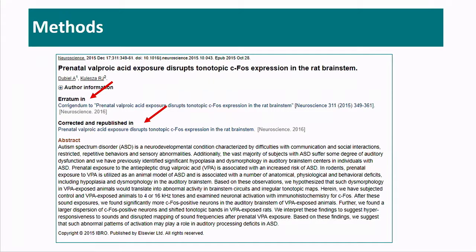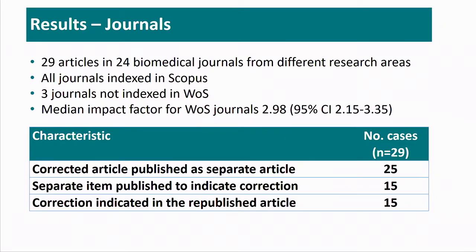For example, when you go to PubMed, this is one of such articles. You will see that there is an erratum, that there is a notice published about what has happened, and also that this article was corrected and republished with a link to the article. And then you see that it again links to the other articles.